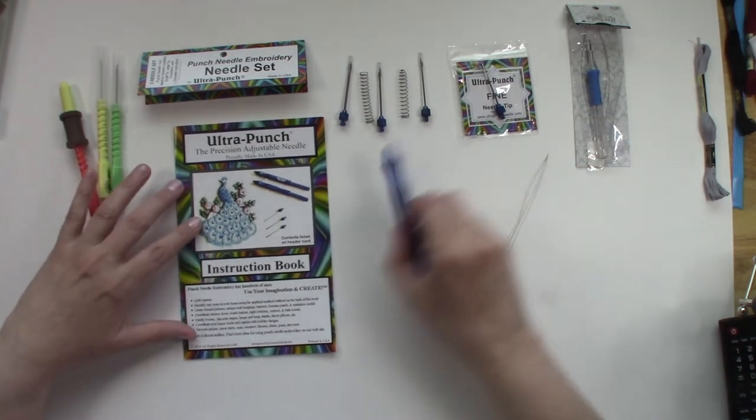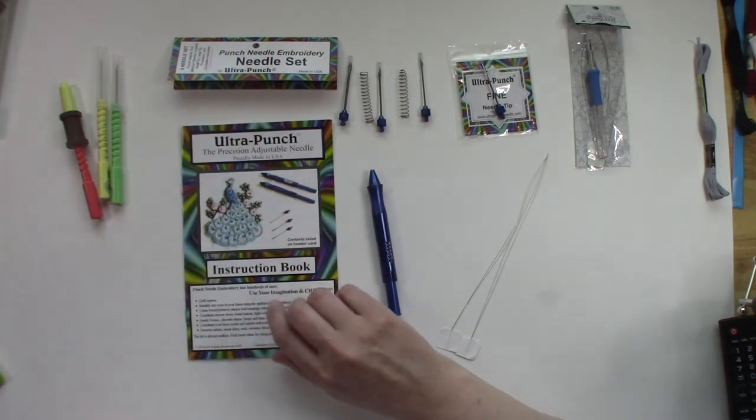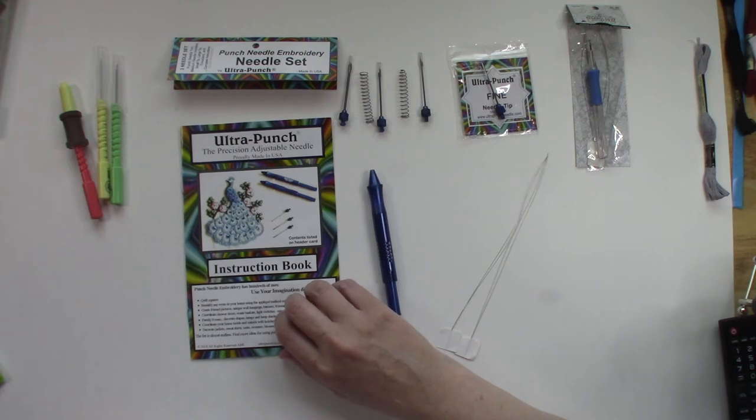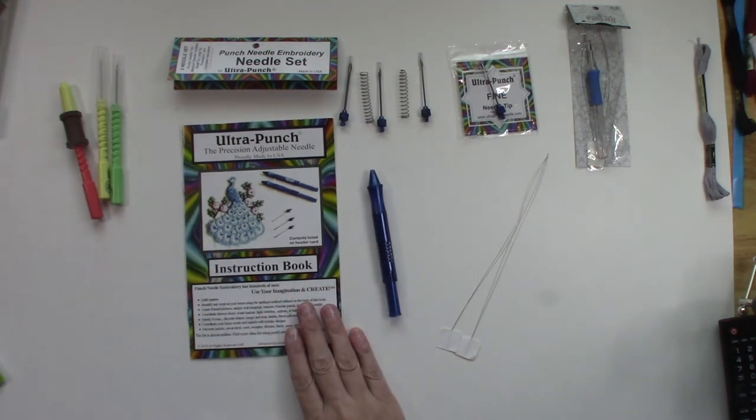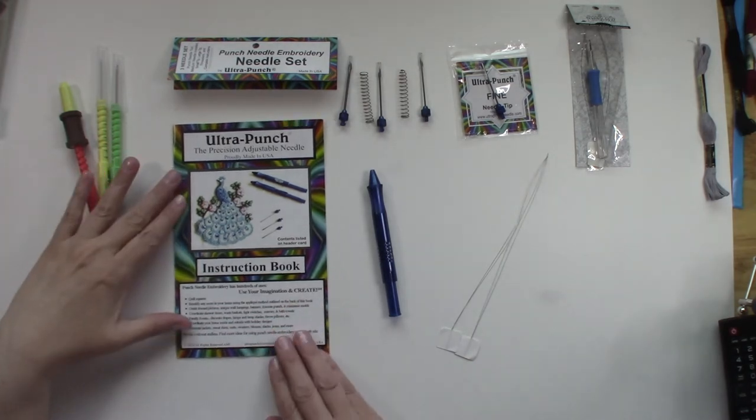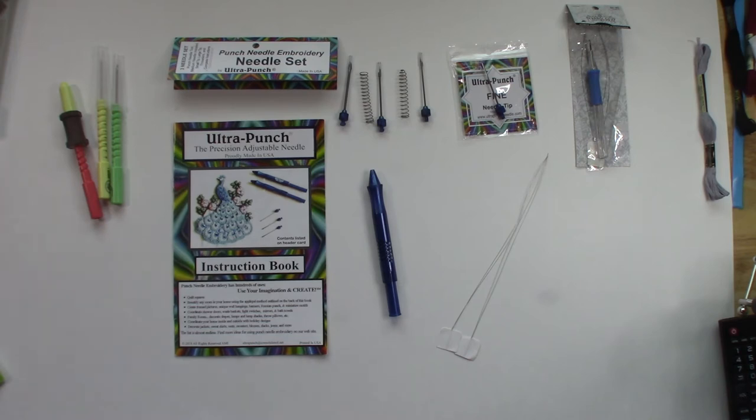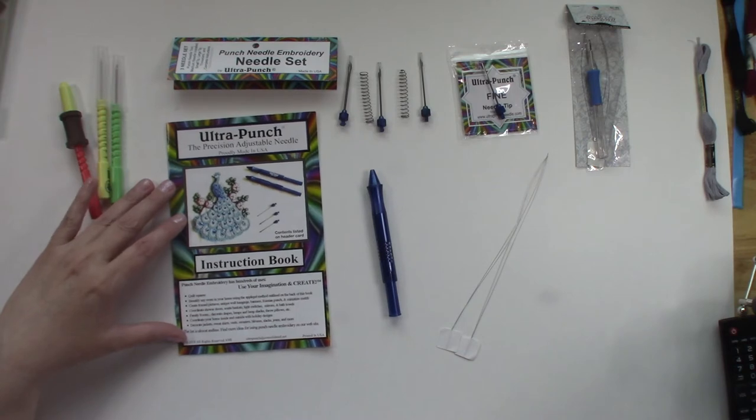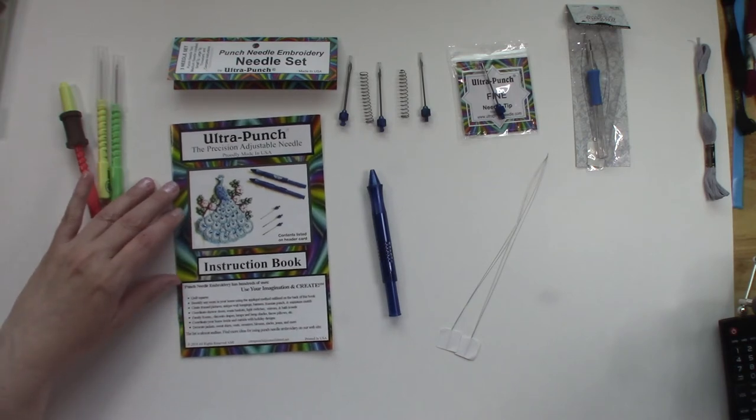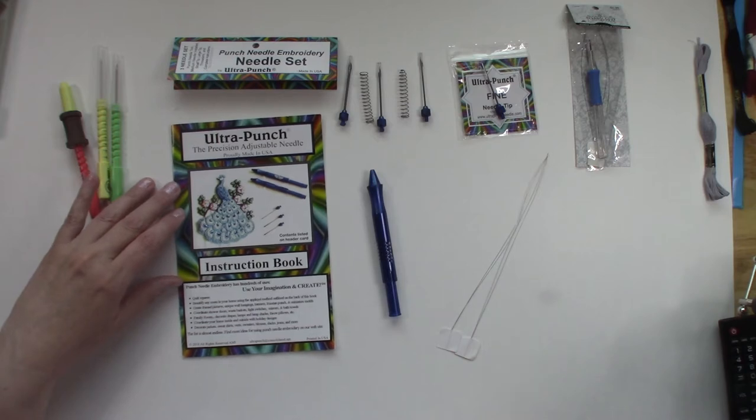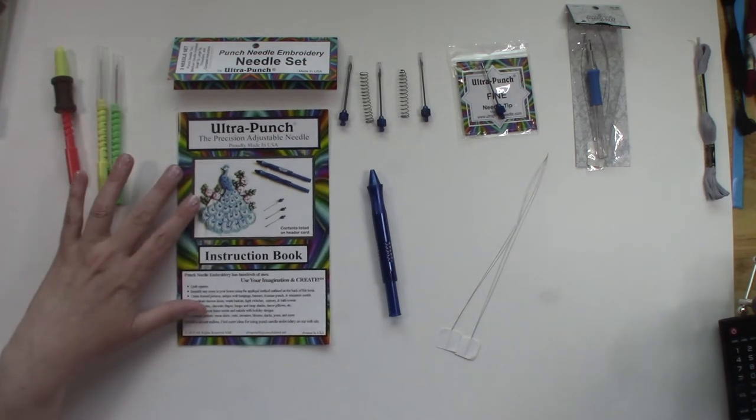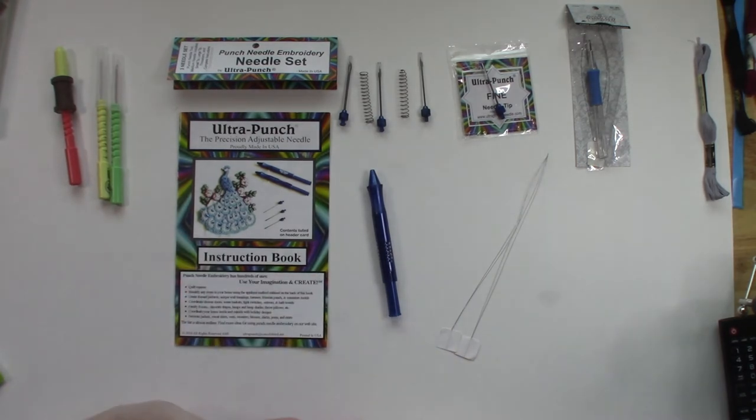You can buy this set on Etsy. I bought mine on Etsy in 2018. I am not in any way sponsored by ultra punch or the site that I bought it from on Etsy. I bought it from a site called Perfect Prim Punch and she was amazing. When I ordered my set, it was out and shipped the next day and it arrived before the even estimated arrival date. So if you're interested, you might want to check out her site. Like I said, I am not sponsored, I am just very impressed with the site.